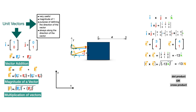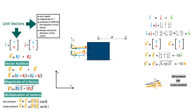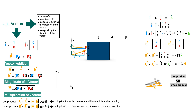To understand dot product and cross product, consider the angle between two vectors F1 and F2. The dot product of F1 and F2 equals the magnitude of F1 times the magnitude of F2 times cosine of the angle between them. Note that F1 cos θ is the projection of F1 onto F2. The cross product of F1 and F2 equals the magnitude of F1 times the magnitude of F2 times sine θ. A key difference: the dot product of two vectors yields a scalar, while the cross product yields a vector. Work is an example of dot product; moment is an example of cross product.